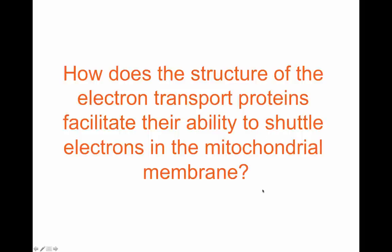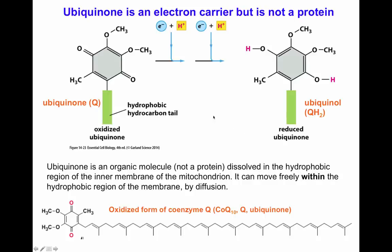Let's look at how the structure of electron transfer proteins and molecules facilitates their ability to shuttle electrons in the mitochondrial membrane. First, ubiquinone is an electron carrier that is one of the few electron carriers that is not a protein. Ubiquinone is also called coenzyme Q or coenzyme Q10. The Q10 comes from the number of isoprenyl subunits that make the hydrophobic region — this molecule has ten isoprenyl subunits, though some other ubiquinones may have fewer.